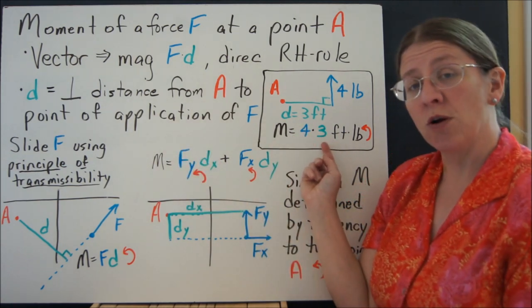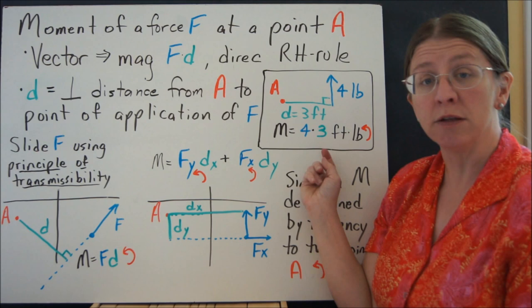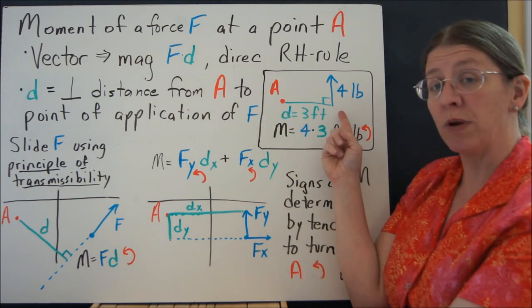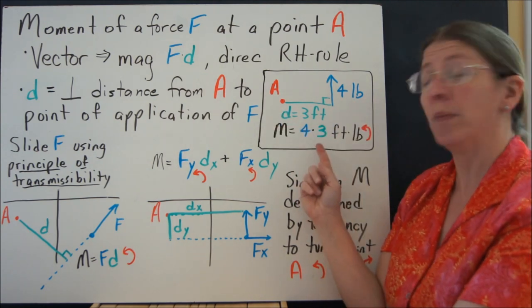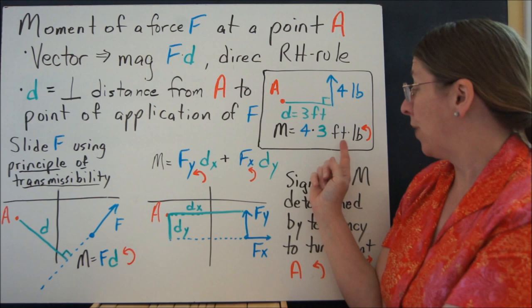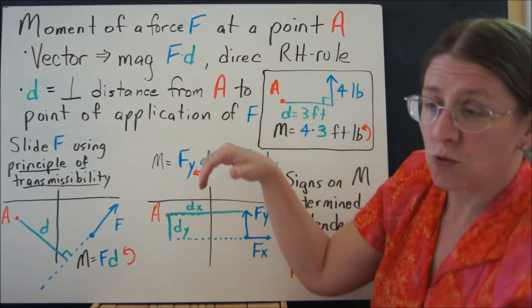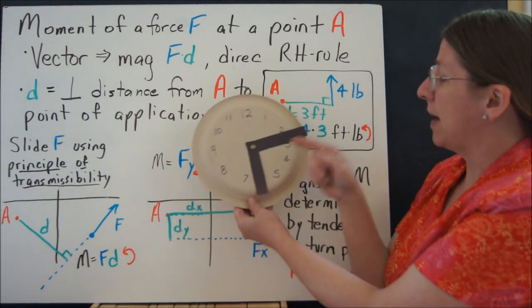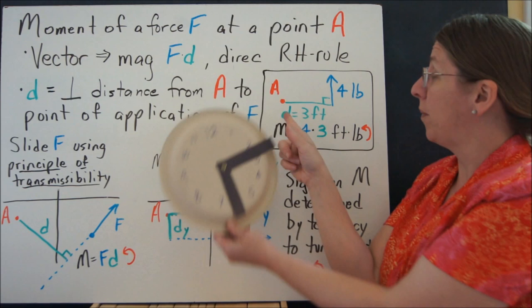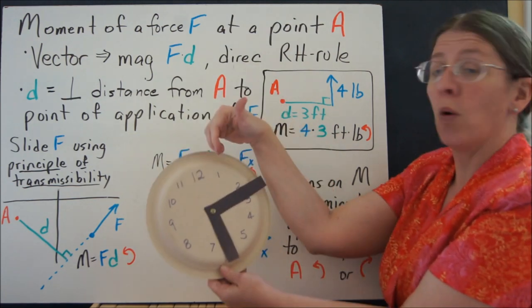So the easiest one we always start with is something where you're already given a perpendicular distance. If you have this three feet and you have that four pounds, then the moment is four times three. The direction is given by which way this will spin. So if you think about this brad that we were talking about before being right here, these would be going counterclockwise.